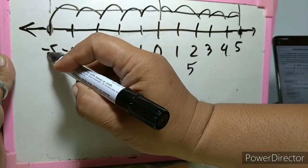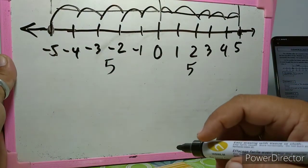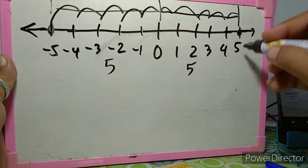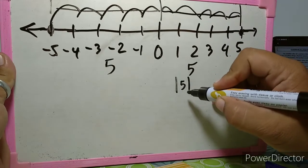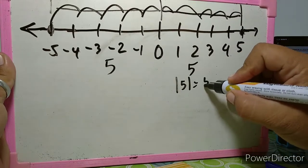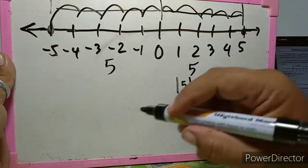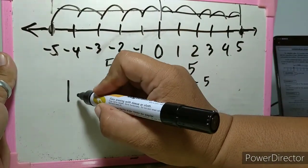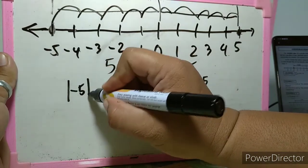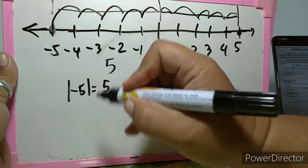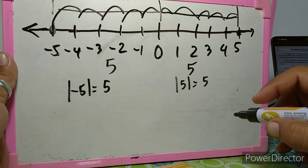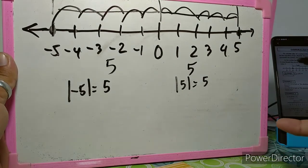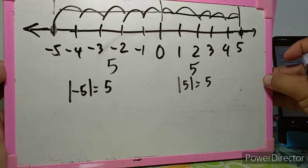From zero to positive five and from zero to negative five, the distance is five units. So the absolute value of positive five equals five, and the absolute value of negative five is also five because the distance is five. Take note: there is no negative distance — all absolute values of a number equal a positive number.